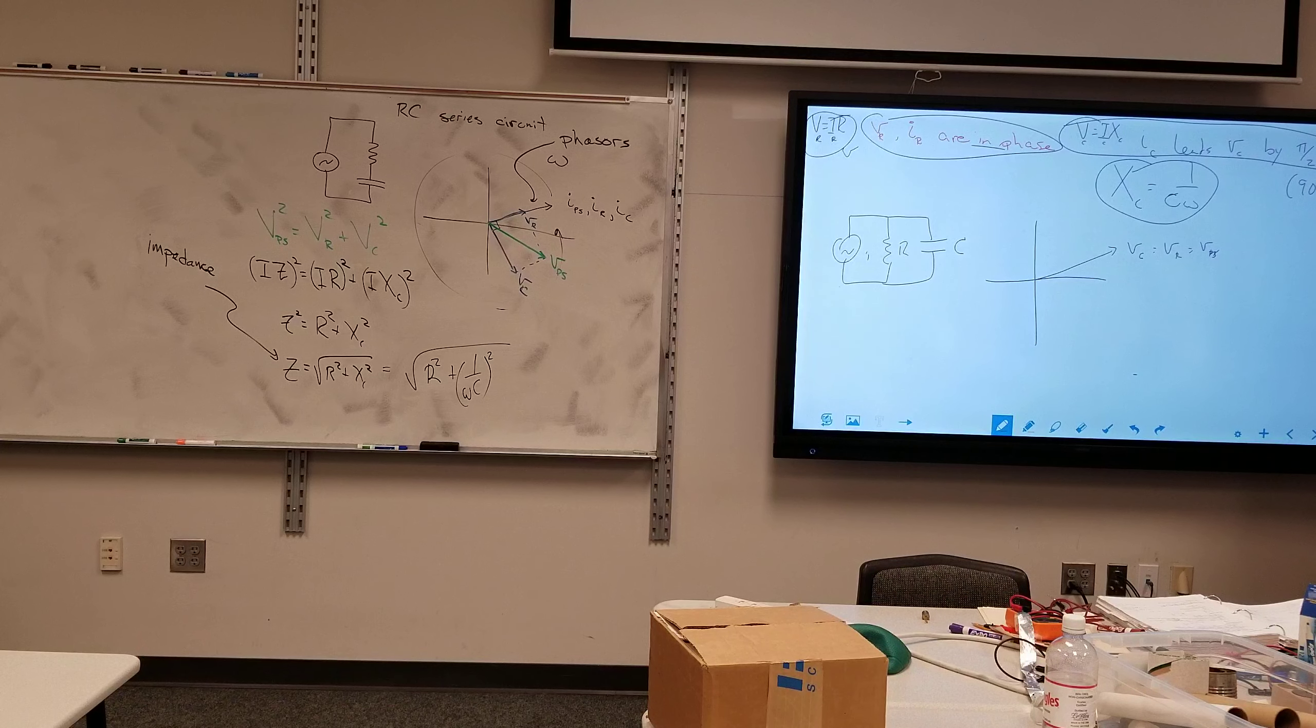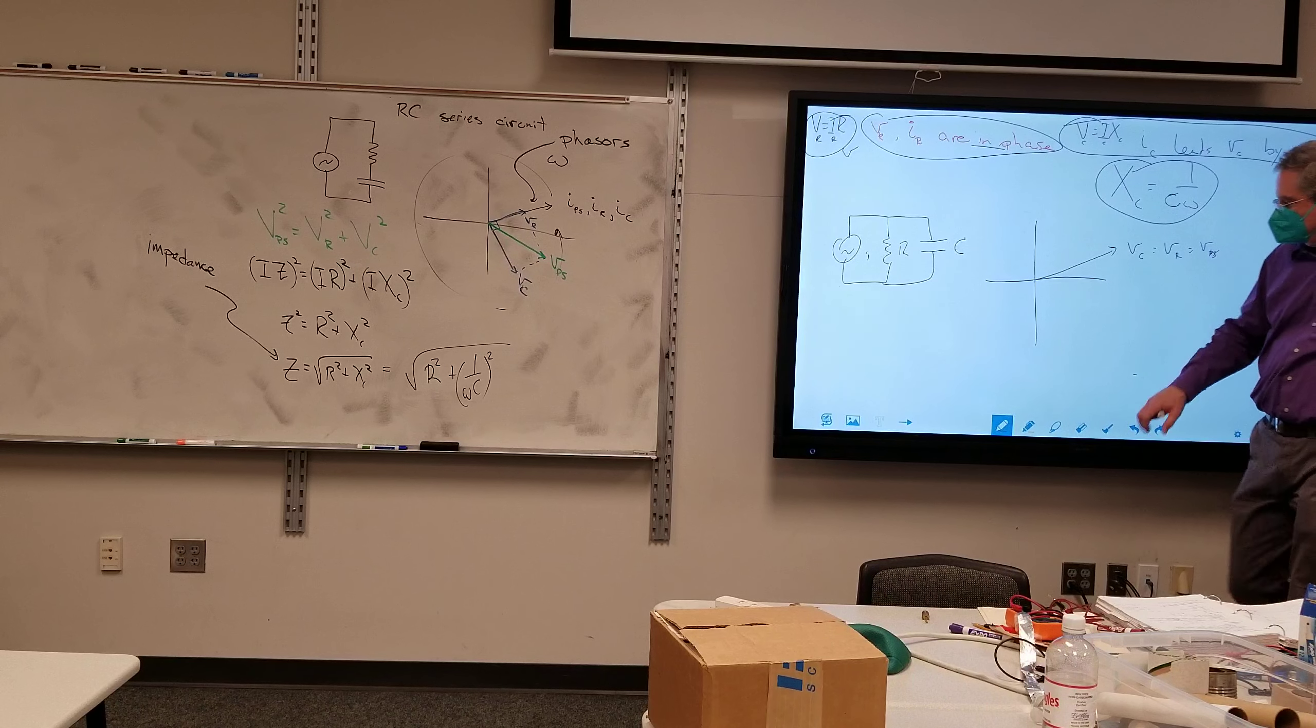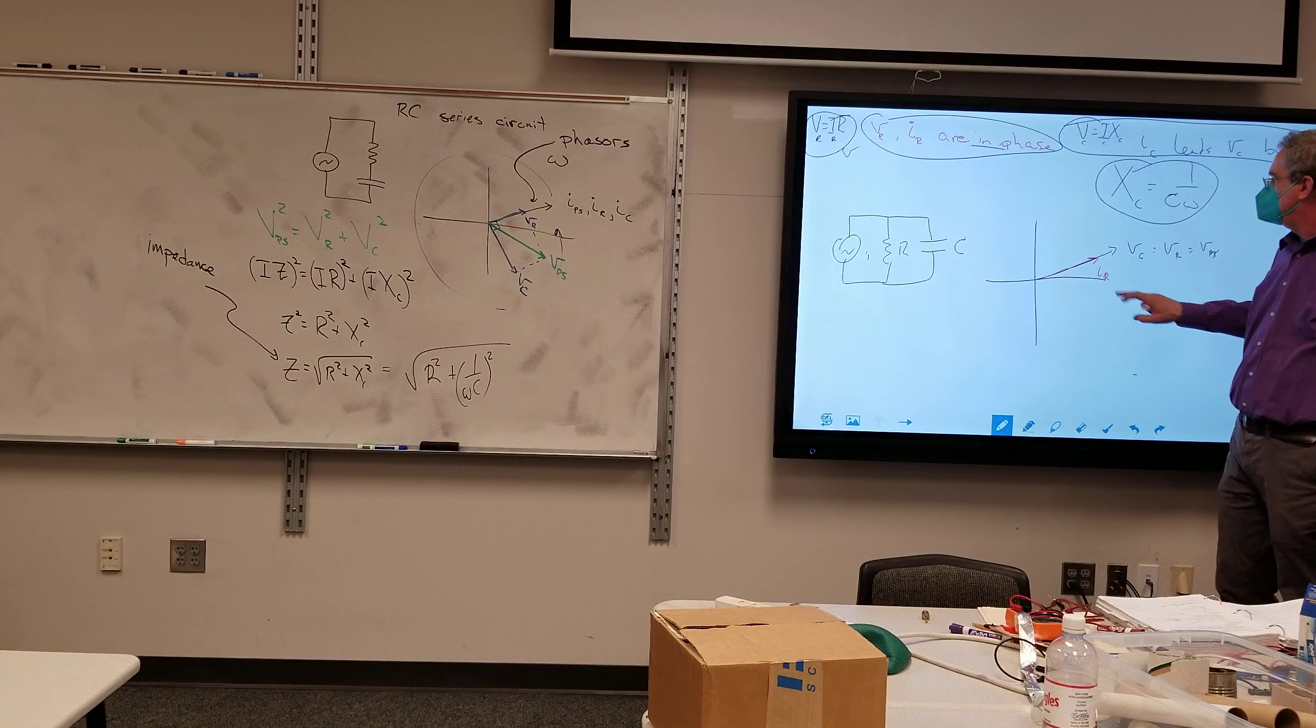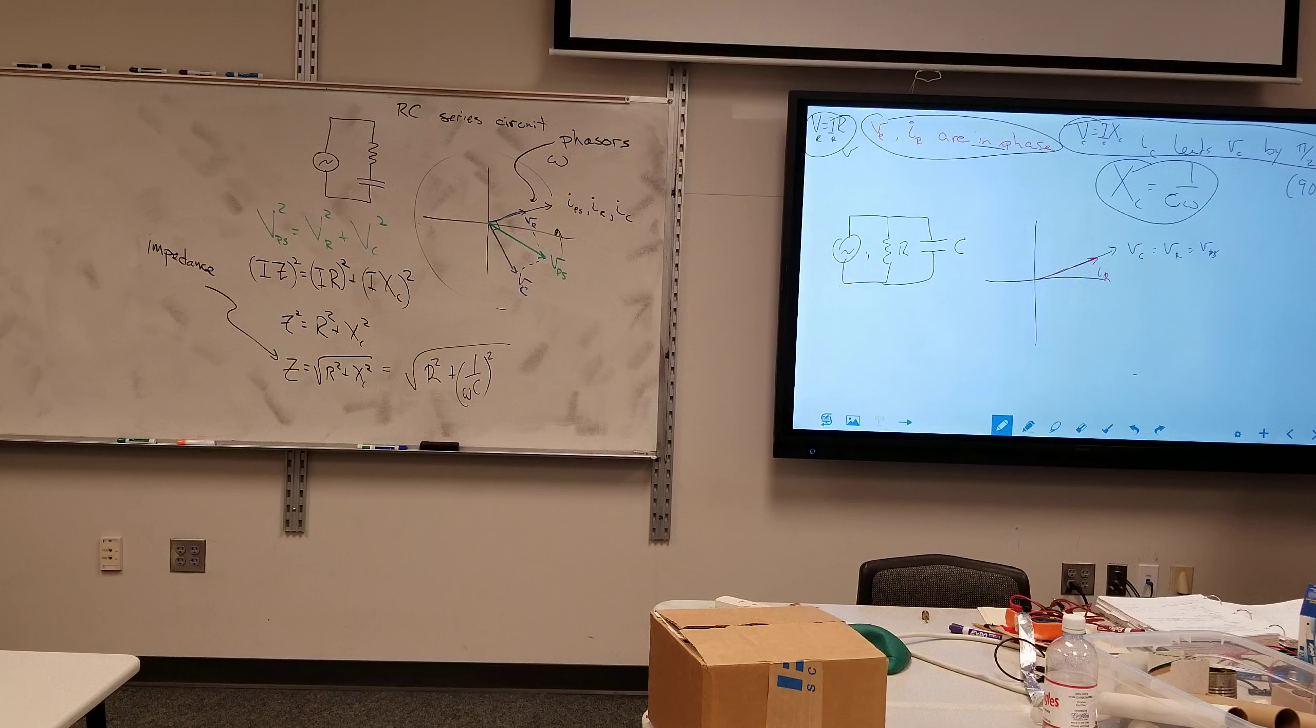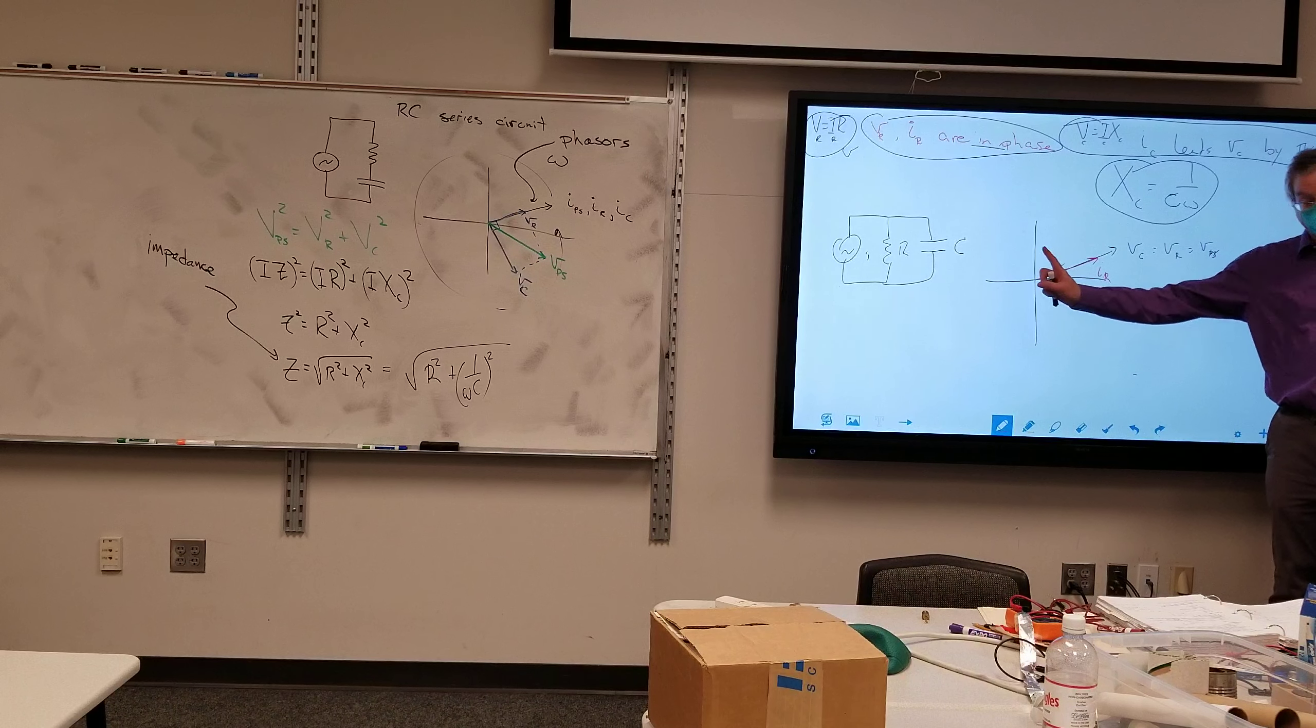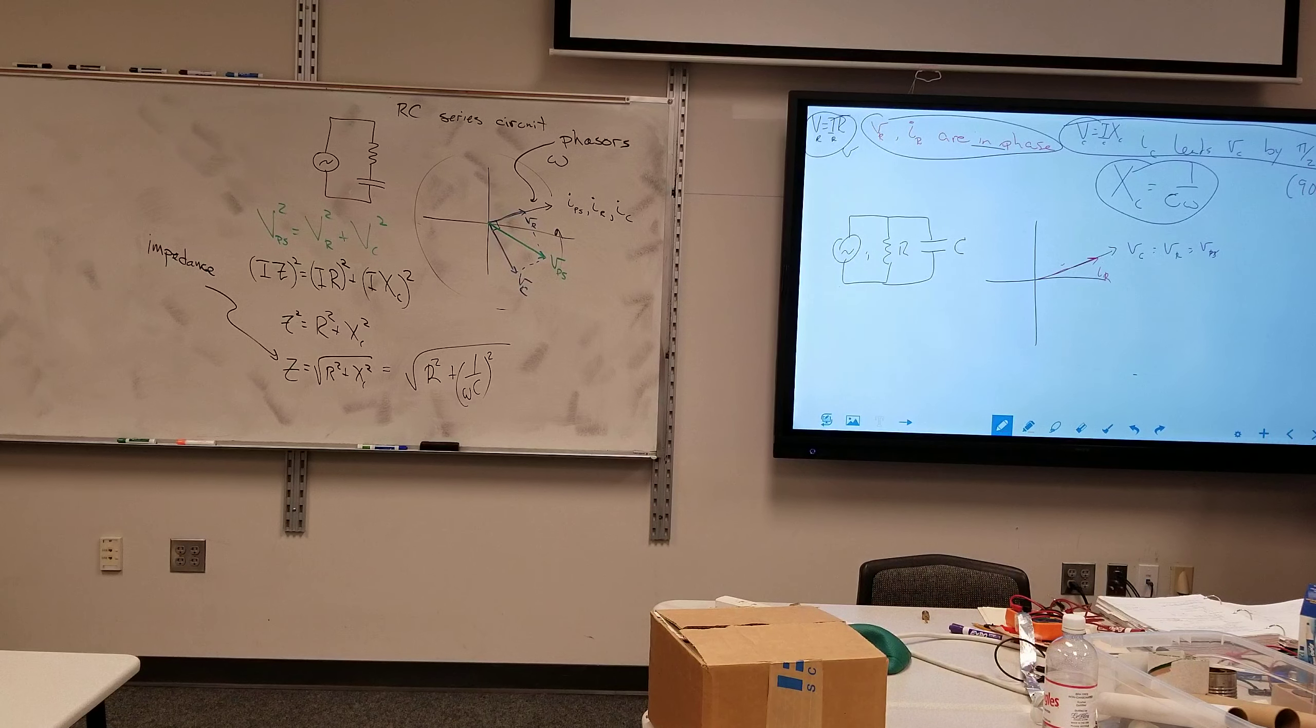All right, now I've got my three current phasors. Where am I going to draw one of them? On the voltage one. Which one? Resistance. Yep. Okay. Where does the, I guess we need I sub C next, where does the current phasor for the capacitor go? 90 degrees to the one for resistance. 90 degrees which way? Yeah. That way? Yeah. Okay. But now I'm going to do that. Okay. So, that way? Yes. Why that way?